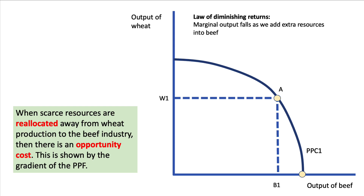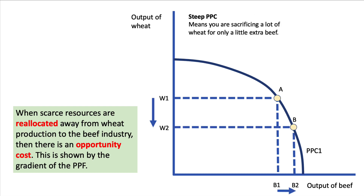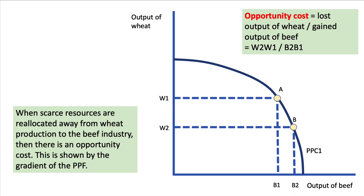The PPF is often used to show the diminishing returns idea. When scarce resources are reallocated away from wheat — let's say we start at W1, B1, shown by point A — there's an opportunity cost, shown by the gradient of the PPF curve. As we produce more beef, from B1 to B2, moving from point A to B, we have to sacrifice some output of wheat. The opportunity cost is the lost output of wheat divided by the gained output of beef: W to W1 divided by B to B1.